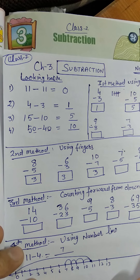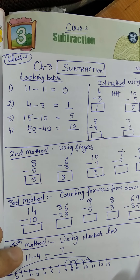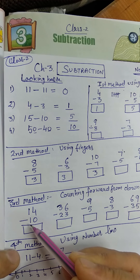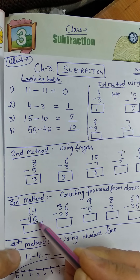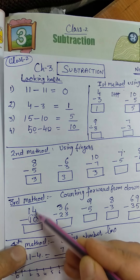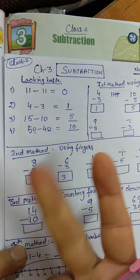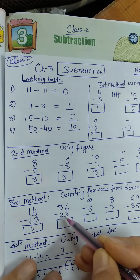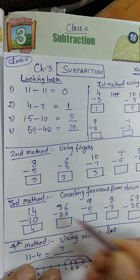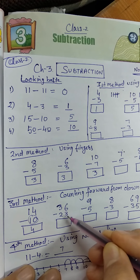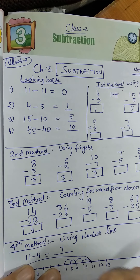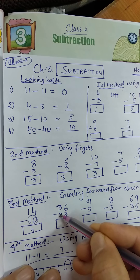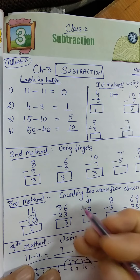The third method is counting forward from the smaller number. For 14 minus 10: circle 10, then count forward up to 14 — 11, 12, 13, 14 — so the answer is 4. For 36 minus 23: separate the digits. Count from 3 to 6 — 4, 5, 6 — that gives 3. Then count from 2 to 3 — after 2 is 3 — that gives 1. So the answer is 13.